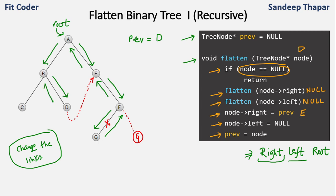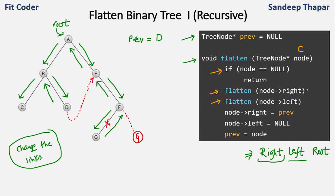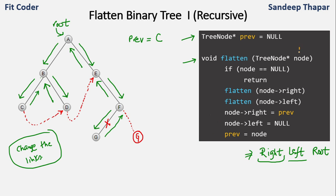For B, we call the left subtree, going to node C. We check if C is null, then call for the right and left subtrees of C — both null, so those return. We set right of C to previous, which is D. So right of C becomes D, left of C is already null, and we set previous equal to C. The function call to C ends and we go back to B. For node B, we set right of B to C, breaking the old link. Left of B is set to null, and we set previous equal to node B.